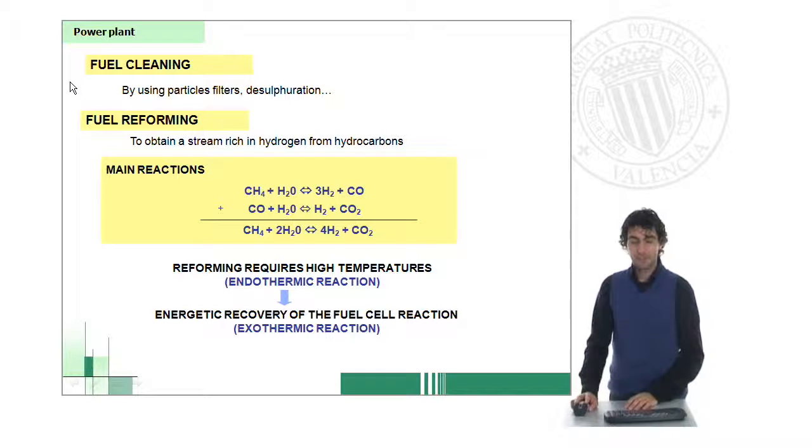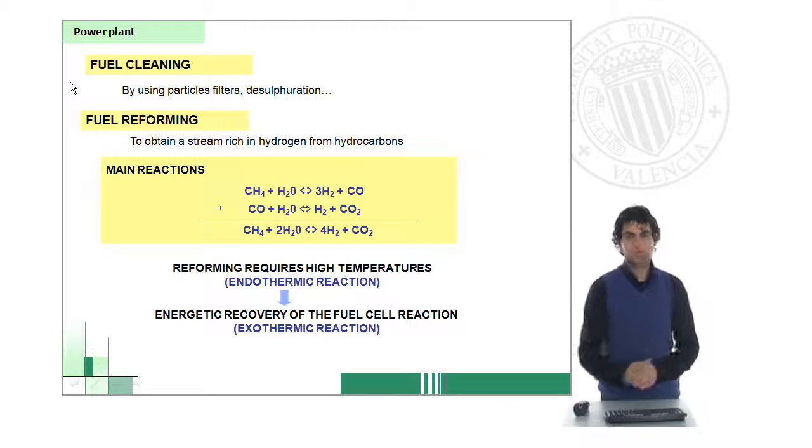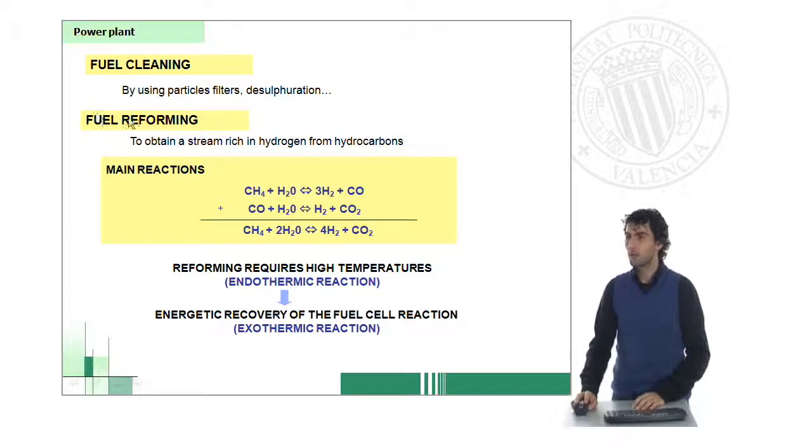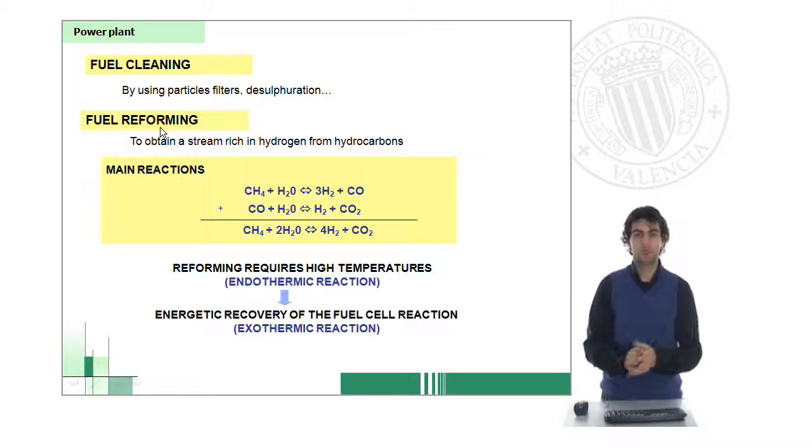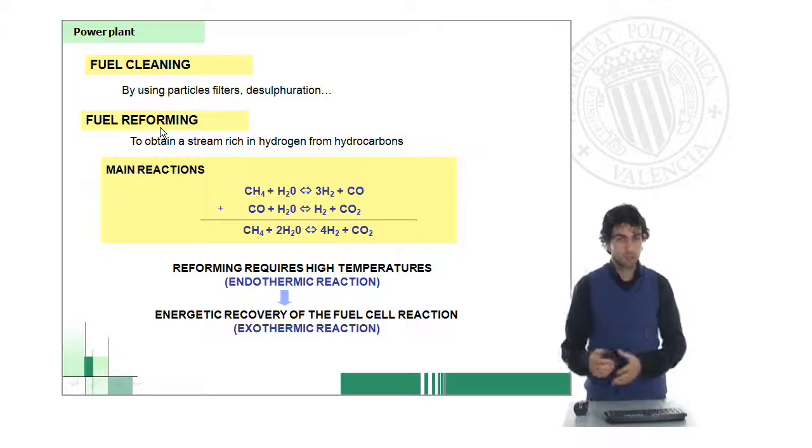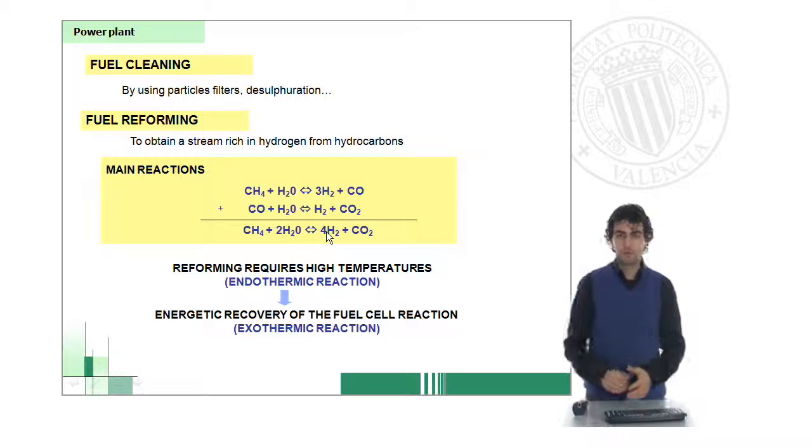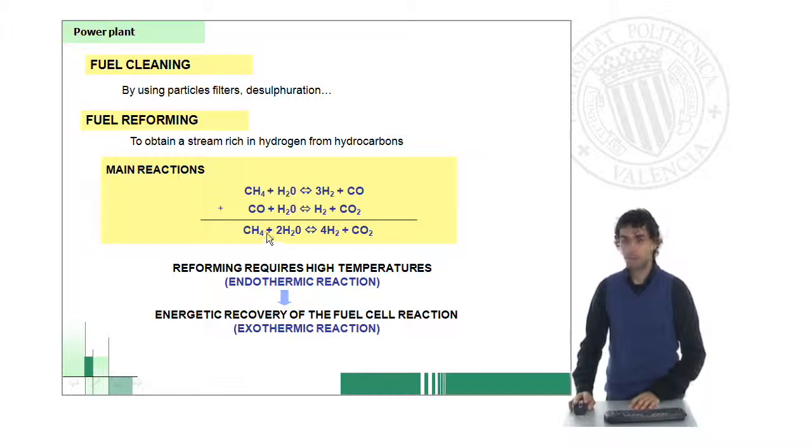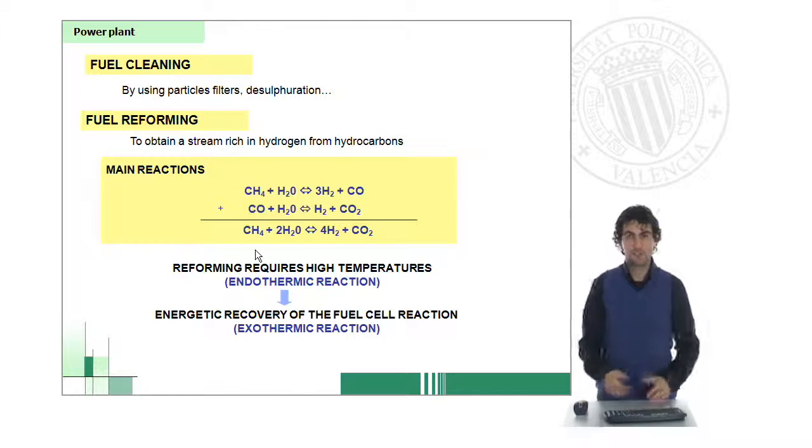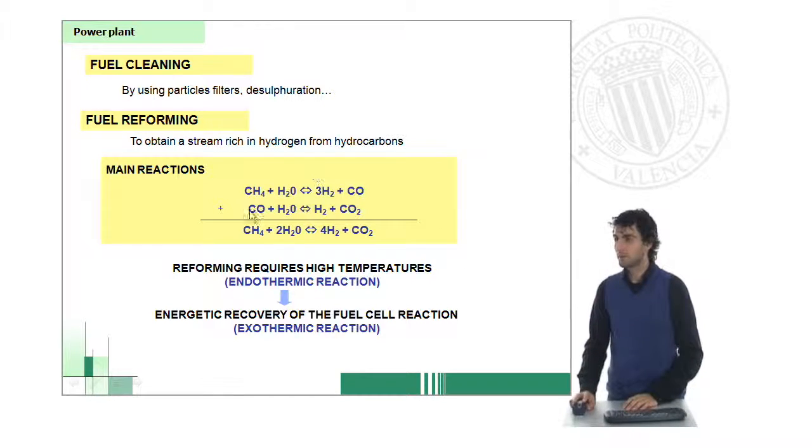After fuel cleaning, which is getting rid of all these components that we saw in the previous slide, we will have to reform the fuel. Fuel reforming is probably the most important operation in fuel pretreatment. It consists of designing a stream rich in hydrogen from the methane, which is natural gas, which is obtained from the commercial pipeline. This is done through these equations which are endothermic reactions.